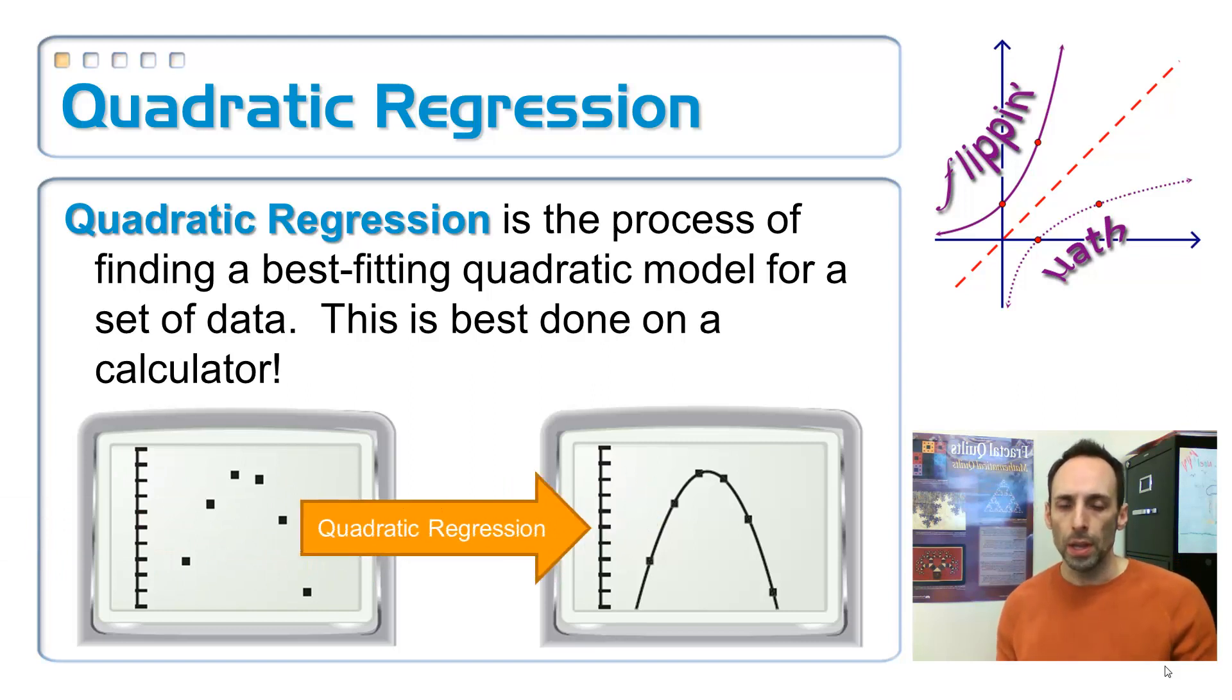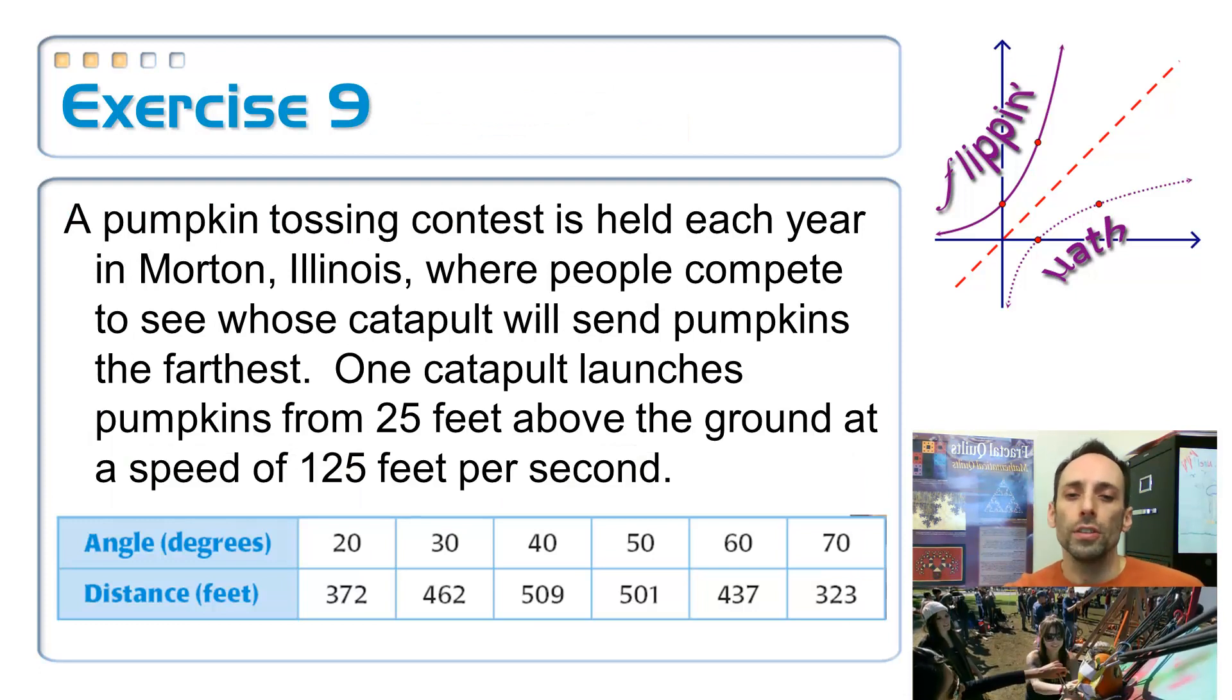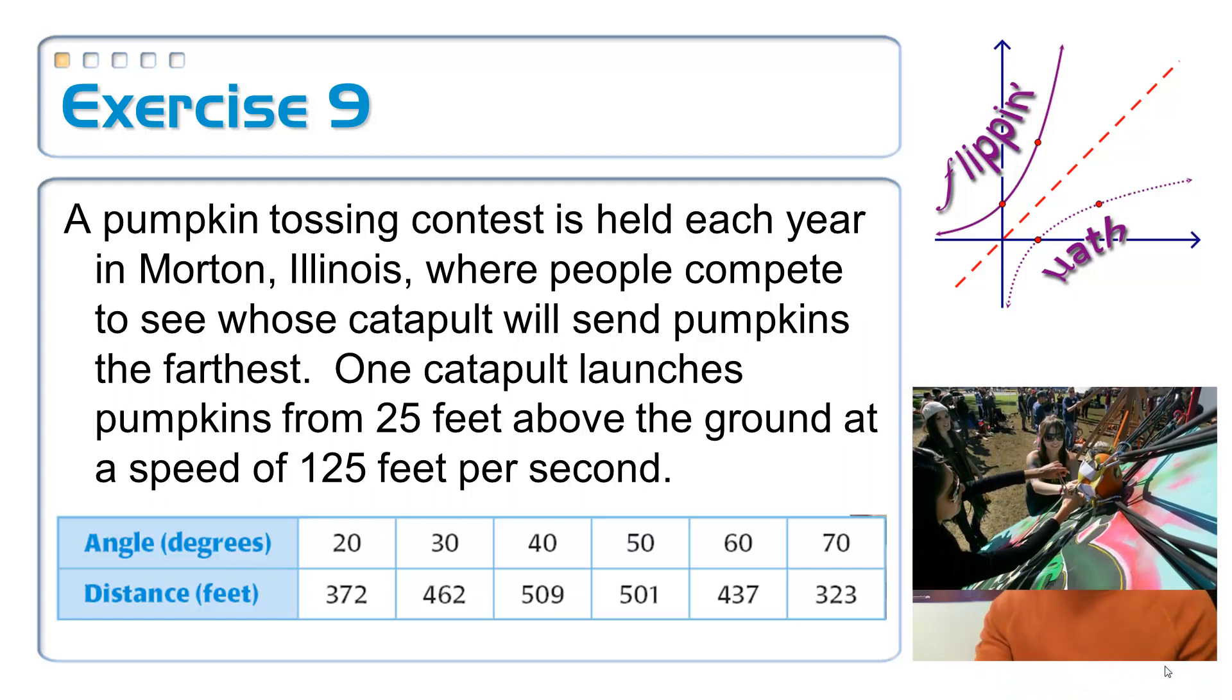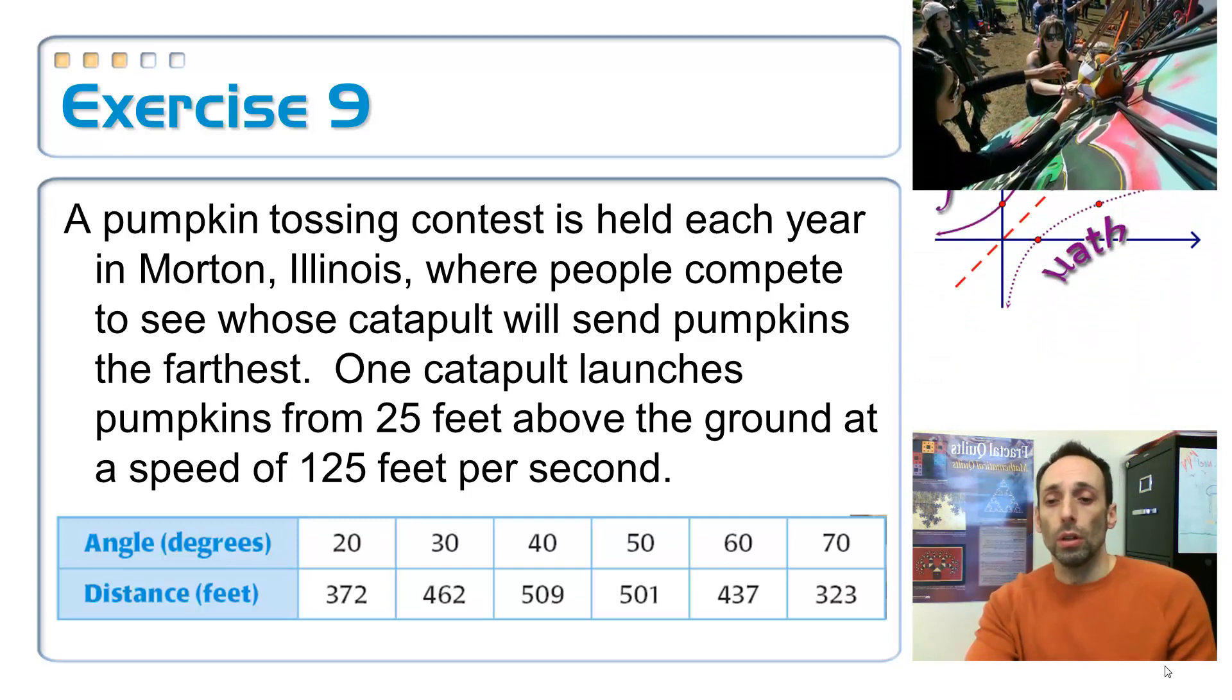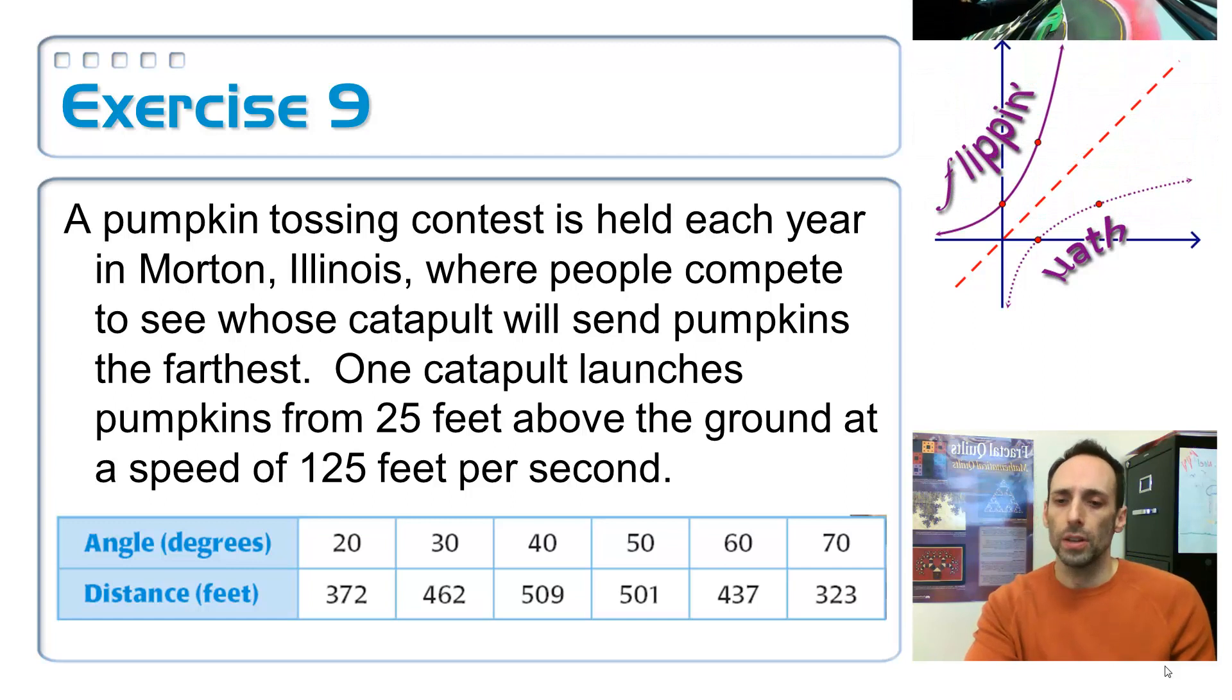That's called quadratic regression. Now, we're not going to use the three methods that we talked about before with the vertex form or the intercept form or the standard form. Instead, I have a collection of points that may not be exactly on a parabola, but we're finding a parabola that does a really good job of going through most of the data. So this first one that we're going to practice this on has to do with launching pumpkins. A pumpkin tossing contest is held each year in Morton, Illinois, true story, where people compete to see whose catapult is going to send the pumpkins the furthest. One catapult launches pumpkins from 25 feet above the ground at a speed of 125 feet per second. Wow!